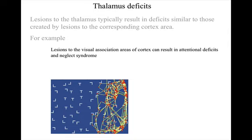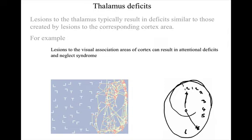show that the activity is limited to the right side of the visual field. So damage to the right visual cortex results in a deficit in visual attention to the left side. And if the same patient is asked to draw an object, like a clock, only the right side is drawn in detail.